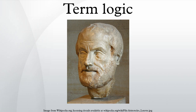Aristotle's logical work is collected in the six texts collectively known as the Organon. Two of these texts in particular, namely the Prior Analytics and De Interpretation, contain the heart of Aristotle's treatment of judgments and formal inference, and it is principally this part of Aristotle's works that is about term logic. Modern work on Aristotle's logic builds on the tradition started in 1951 with the establishment by Jan Lukasiewicz of a revolutionary paradigm, reinvigorated in the early 1970s by John Corcoran and Timothy Smiley, which informs modern translations of Prior Analytics by Robin Smith in 1989 and Gisela Striker in 2009.